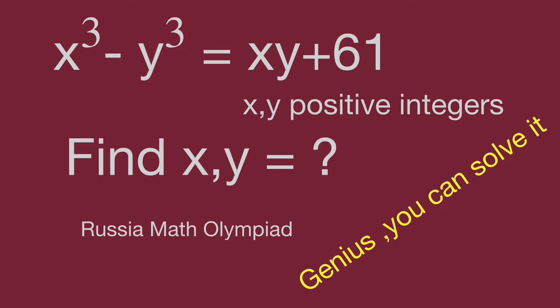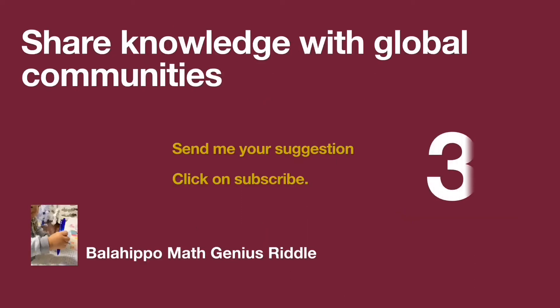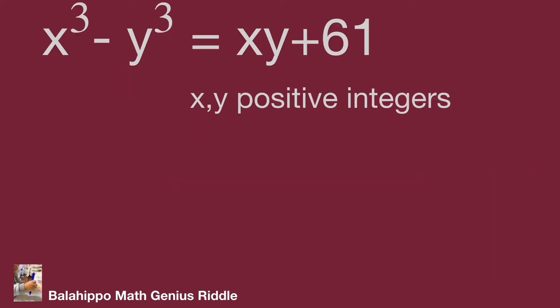Can you find the value of x and y? Pause the video and find the answers on your own while you are ready. Keep watching the video to check the result. The question provides two pieces of information: the equation x cubed minus y cubed equals x times y plus 61, and that x and y are positive integers.